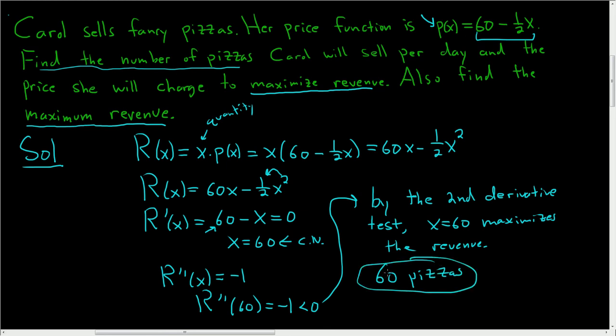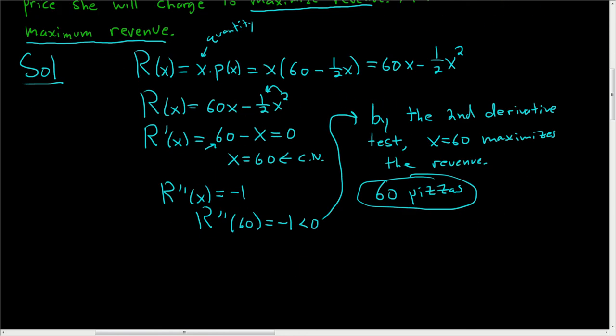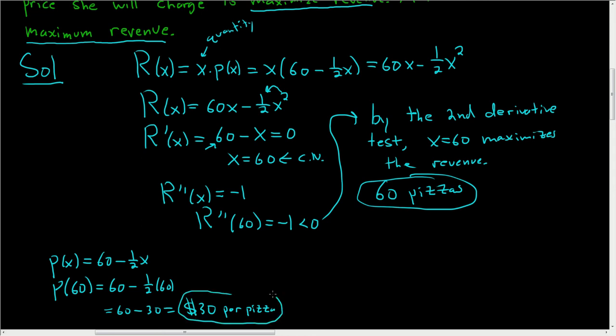And then it says, the price she will charge. To find the price, we'll just use the price function. We want the price consumers will pay to buy exactly 60 pizzas. So 60 - 1/2 times 60. This is 60 - 30, which is $30. So she should charge $30 per pizza in order to maximize her revenue. They're fancy pizzas, so they cost a little bit more.